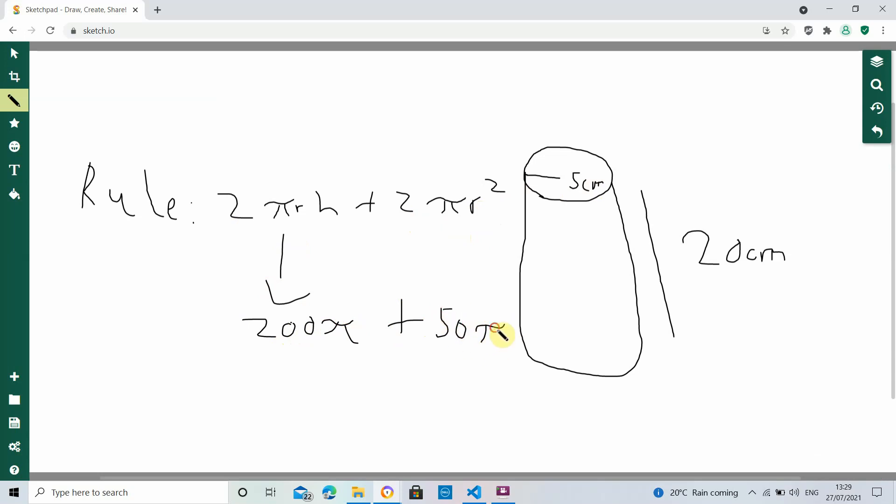And 200 pi plus 50 pi, well that will be 250 pi.